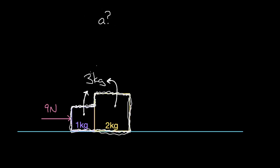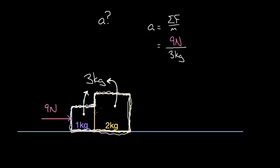This is an important idea: the properties of a system, like the total mass, are determined by the properties of the objects in that system — you can simply add up the masses. Treating this as a single object, I can use Newton's second law: acceleration equals net force over mass. With a total mass of three kilograms and the only external force being nine newtons, I can ignore the internal forces between the boxes. Solving gives an acceleration of three meters per second squared.